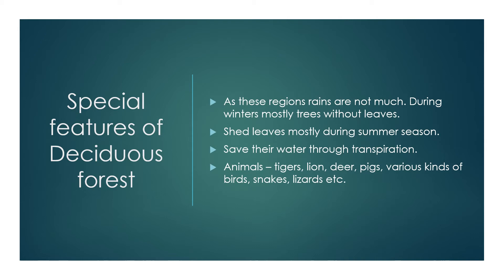Trees also shed their leaves to save water through transpiration. Transpiration is the loss of water from the surface of leaves. When trees shed their leaves, transpiration is prevented and the plant gets whatever water is available in the ground for growth. Animal life includes tigers, lions, deer, pigs, various kinds of birds, and snakes. These are the deciduous forests.